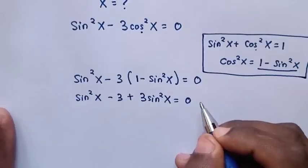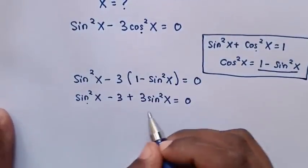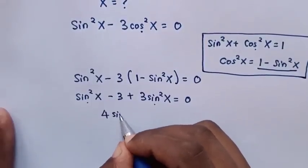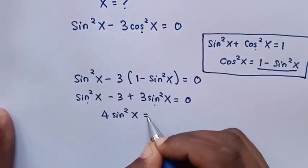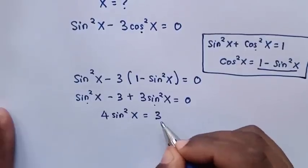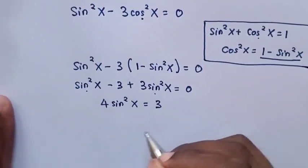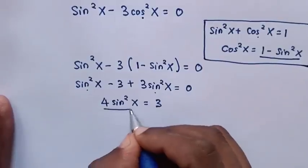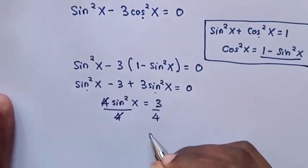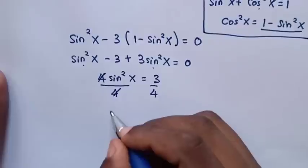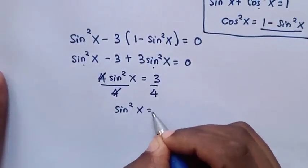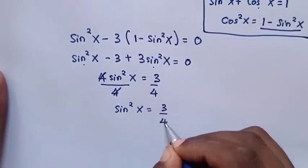In the next step, sin squared x and 3 sin squared x are added together to give 4 sin squared x. We take the negative 3 to the right side, so 4 sin squared x equals 3. Then we divide both sides by 4, giving sin squared x equals 3 over 4.